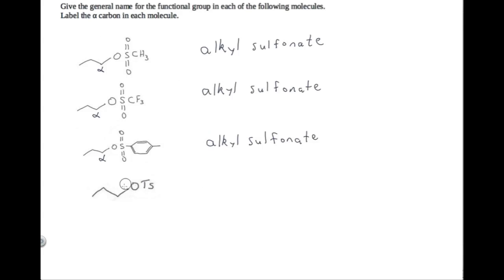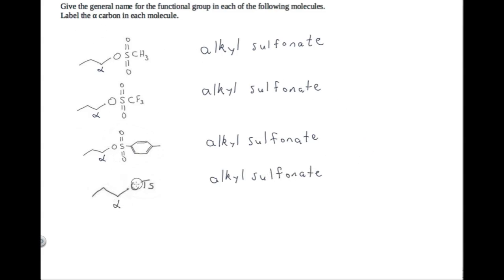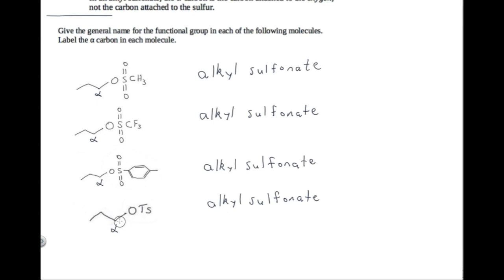You should also know that this molecule is an alkyl sulfonate — it is just an abbreviation for the full structure; these two are the same molecule. This abbreviation comes from the fact that this group is called toluene, so we could call this molecule toluene sulfonate. If you see this molecule, it's another alkyl sulfonate. The alpha carbon is the carbon attached to the oxygen. In this abbreviation, we show the oxygen that's attached to the alpha carbon.